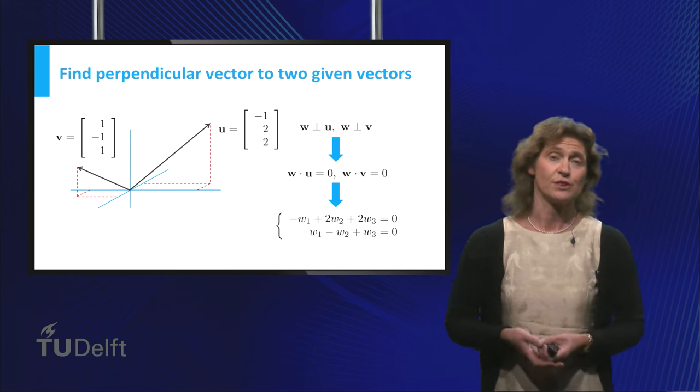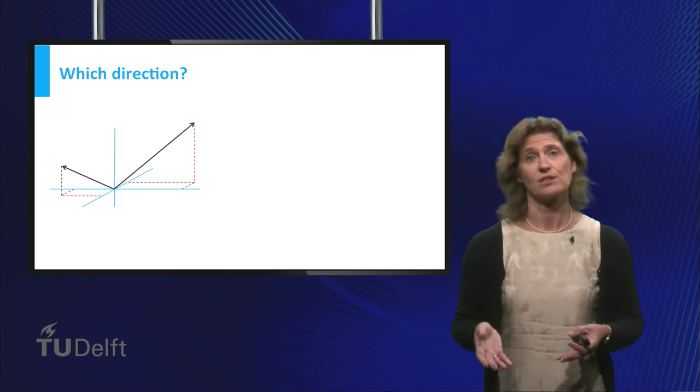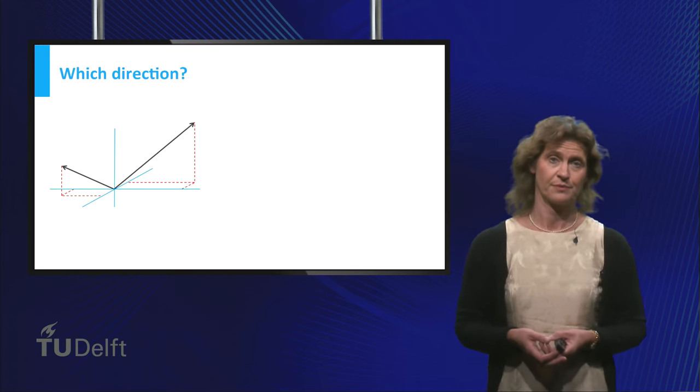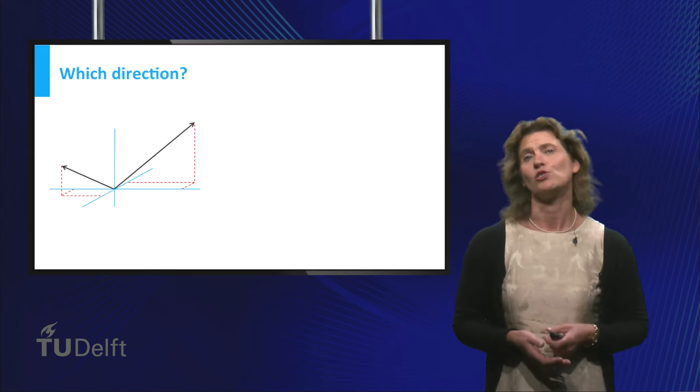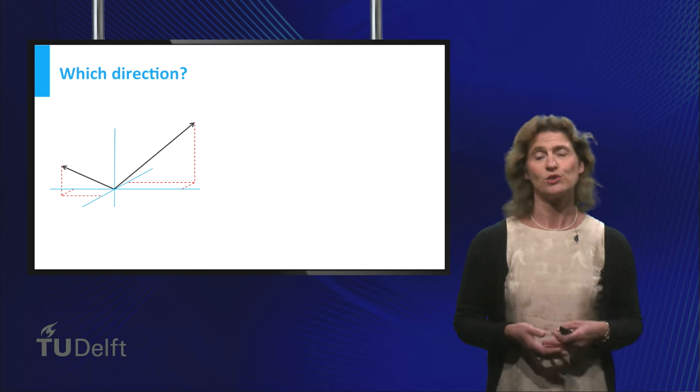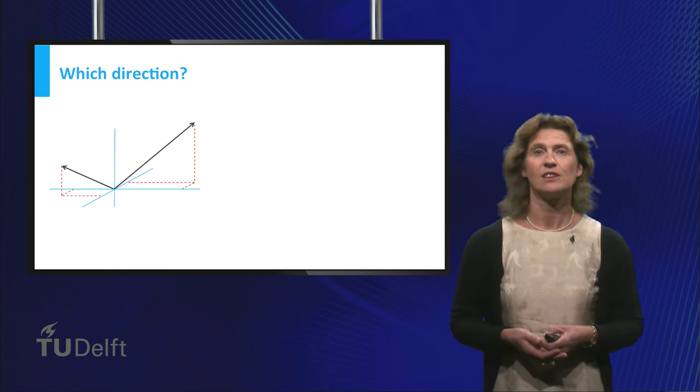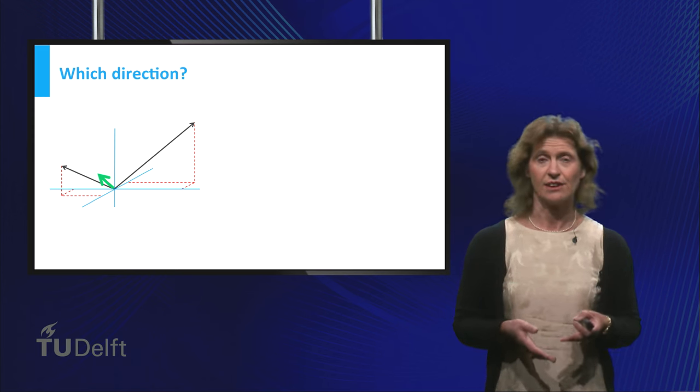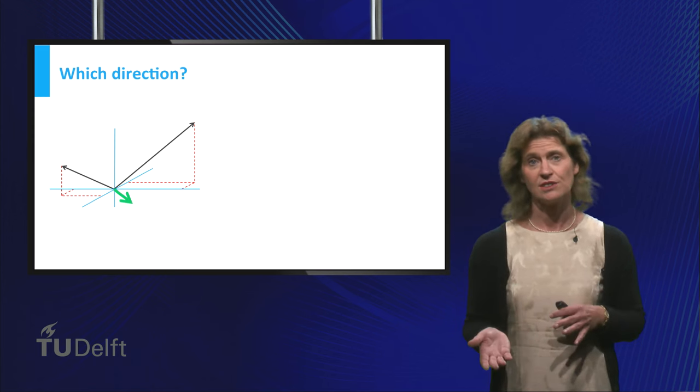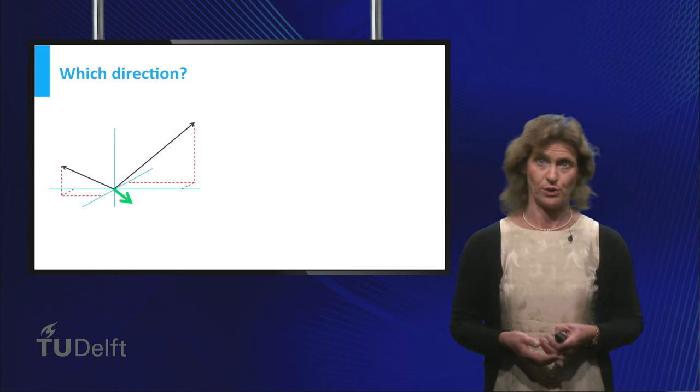And this you can do forever, you just change the length of the perpendicular vector. One thing you could do to try to overcome this non-uniqueness is to restrict your attention to unit vectors. But even then you see that there are still two possible directions in which the vector you are looking for can point.